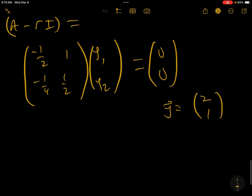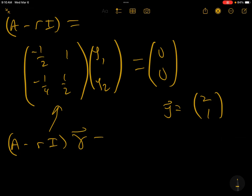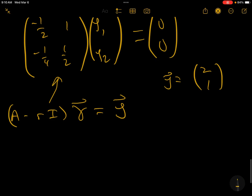Now, if you want to find gamma, what you do is you take A minus r I times gamma and set that equal to zeta, the one we just found. So now we get the system: minus one half, minus a quarter, one, one half, and we're setting this equal to 2, 1 to solve for gamma.